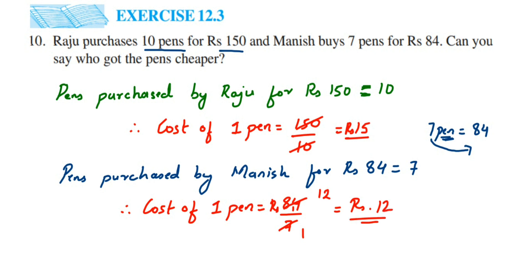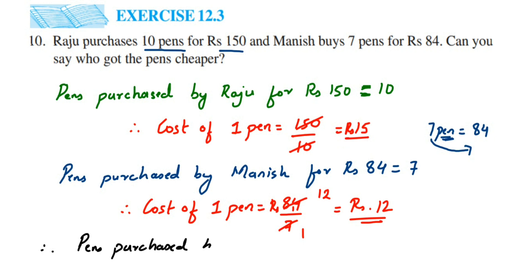So Manish bought a pen for 12 rupees, whereas Raju bought the pen for 15 rupees. Which one is cheaper? 12 rupees is less, which means Manish bought the pens at a cheaper rate. That is the conclusion. Therefore, pens purchased by Manish are cheaper. I hope this question is clear. In case you have any other question or doubt, you can drop a comment. Thank you so much for watching.